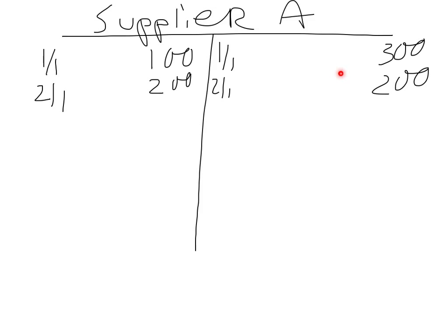First you add up each side to work out what side is the biggest. So our debit side is 100 plus 200 which is equal to 300. And our credit side is 300 plus 200, which is 500. You then take the biggest side and you balance both sides using the biggest value, which is 300 plus 200, 500.